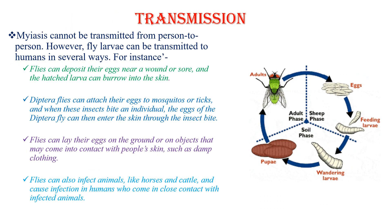Myasis cannot be transmitted from person to person. However, fly larvae can be transmitted to humans in several ways. It can be transmitted when flies deposit their eggs near or around a wound or sore, and the hatched larvae can grow into the skin.